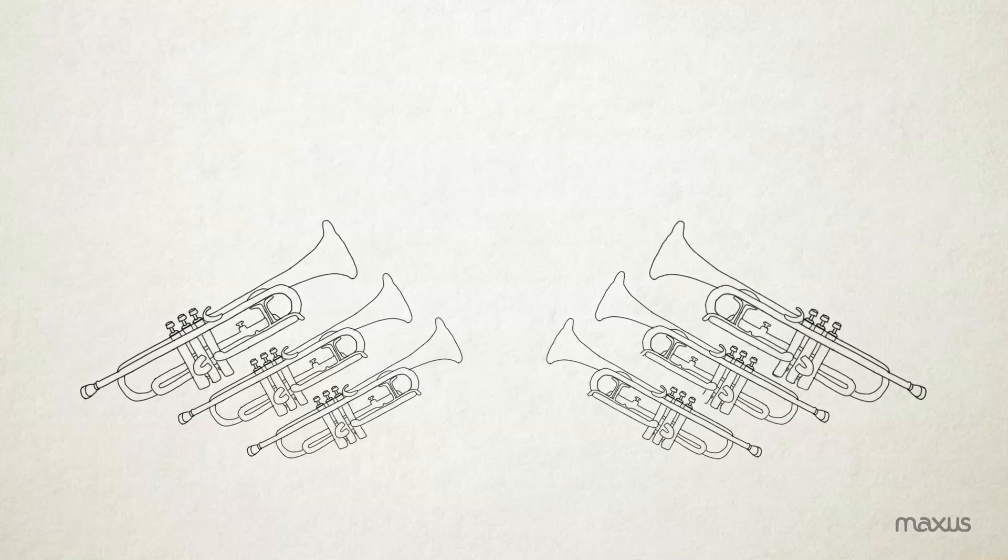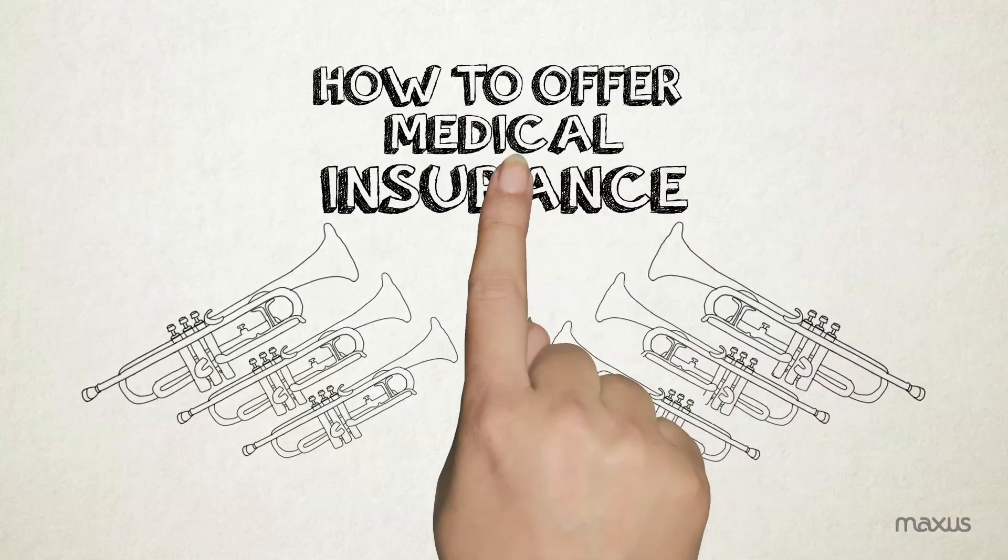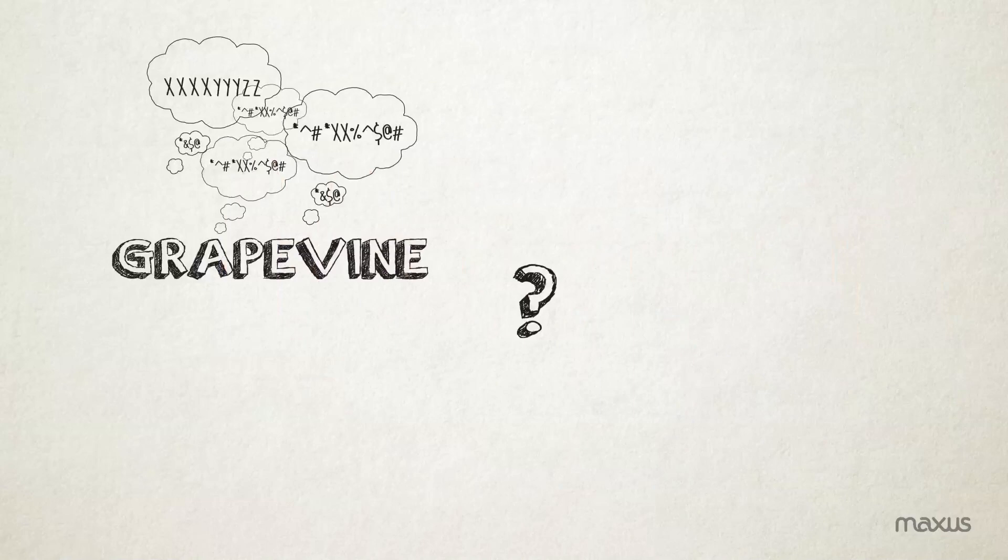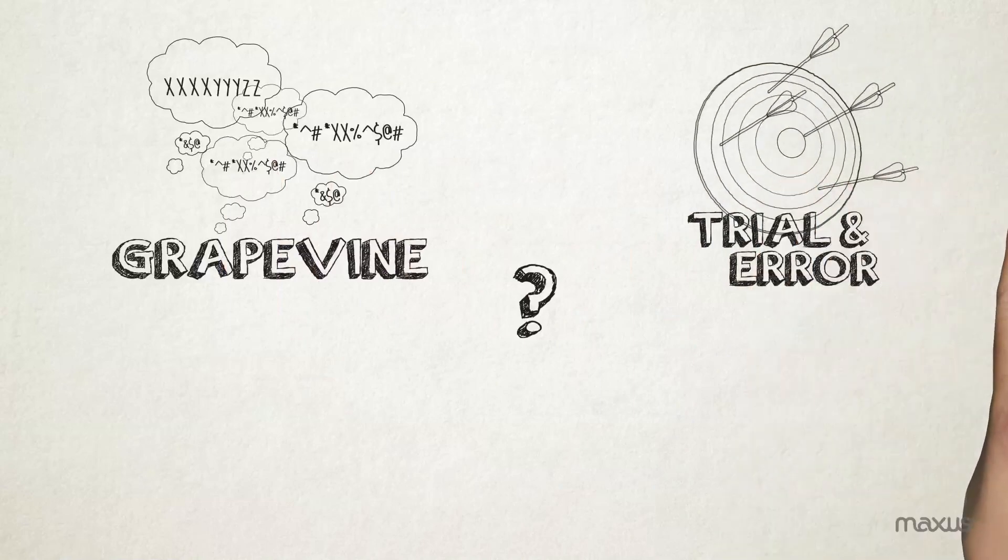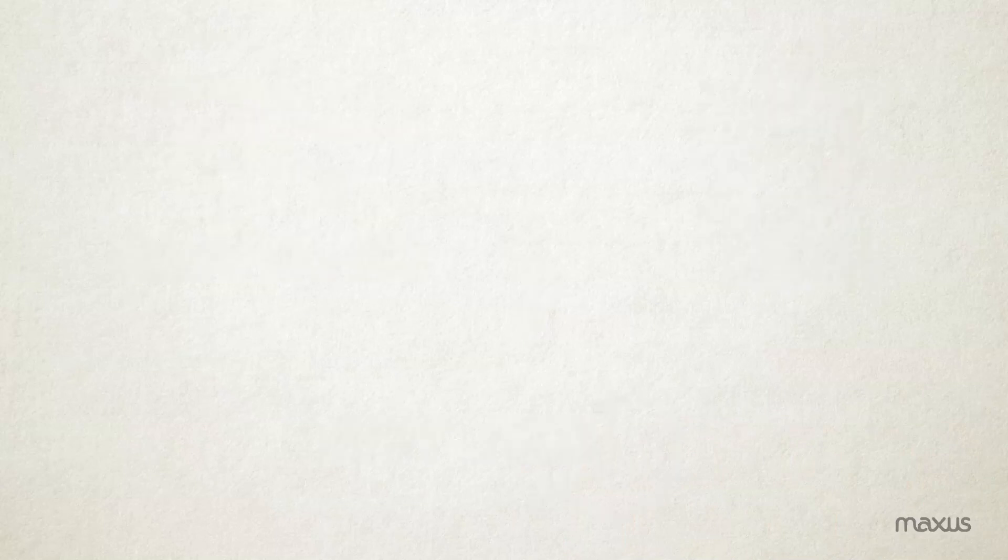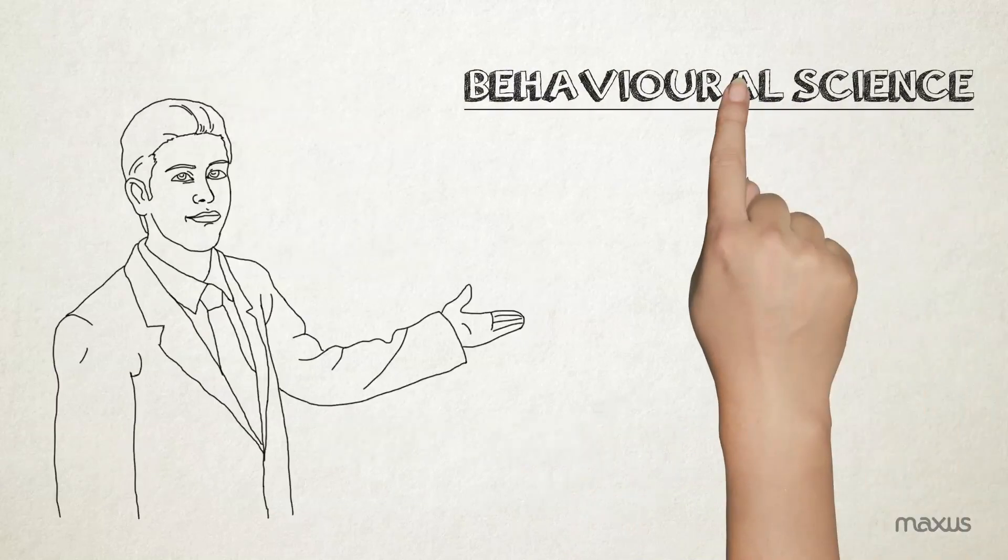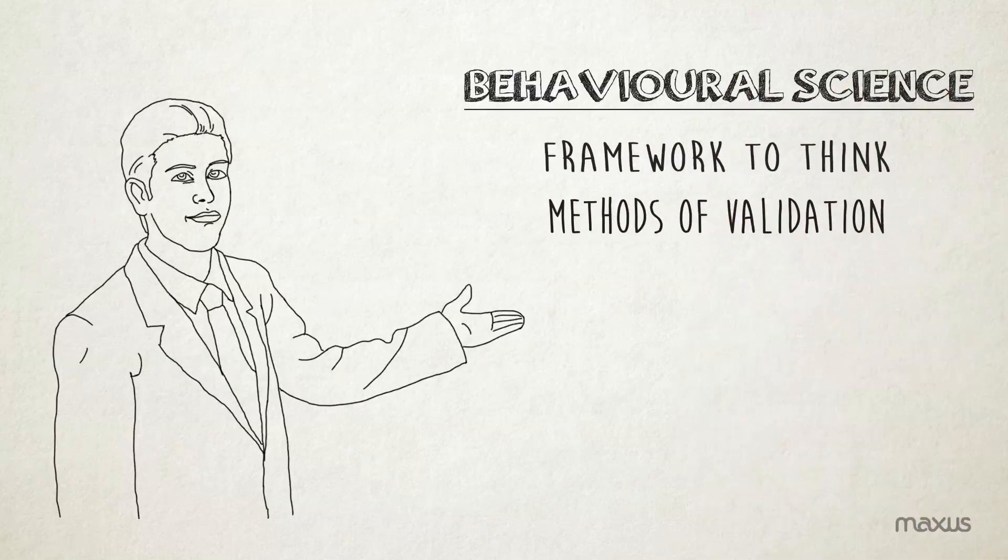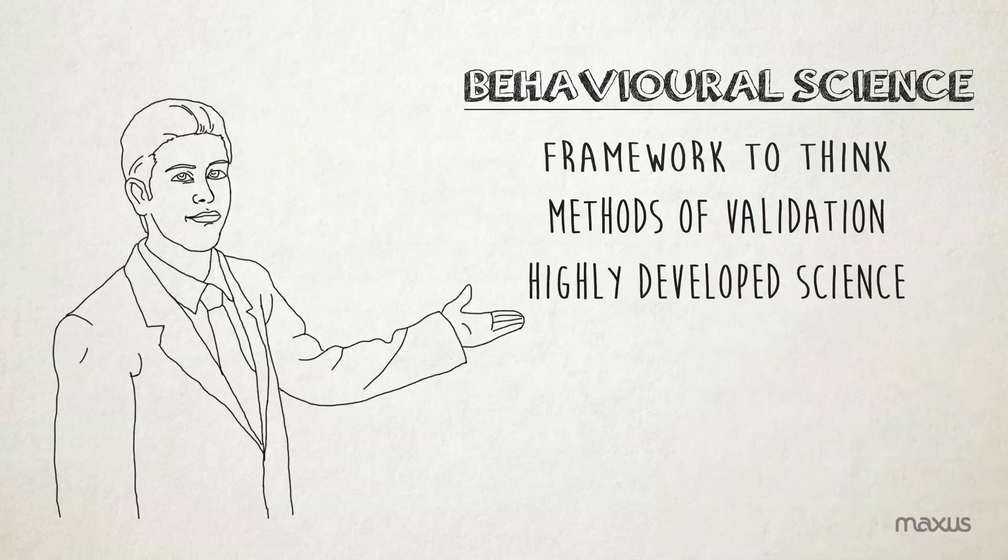Now, the rollout team can use this understanding of a population's loss aversion to decide how to offer the medical insurance. So, does the rollout team need to rely on grapevine, trial and error or gut feel, or can they choose a scientific way? That's the value of behavioural science. It gives the marketer a framework to think and method of experimental validation of hypothesis, all based on a highly developed science.